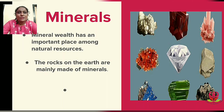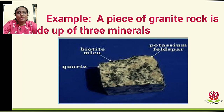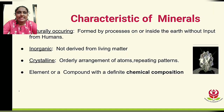The rocks on the earth are mainly made up of minerals. Let's see an example: a piece of granite rock is made up of three minerals — quartz, biotite mica, and potassium feldspar. Now let's study the characteristics of minerals.